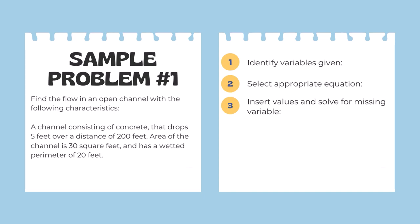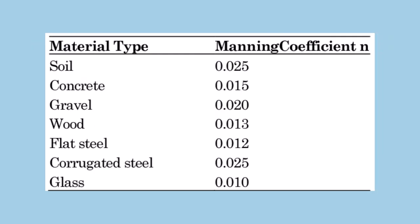So we have many things listed here, but we need to actually find Manning's n. So if we look at the table, we can see that the channel is consisting of concrete. Concrete has a Manning's coefficient of n, so we'll use 0.015 in this case.